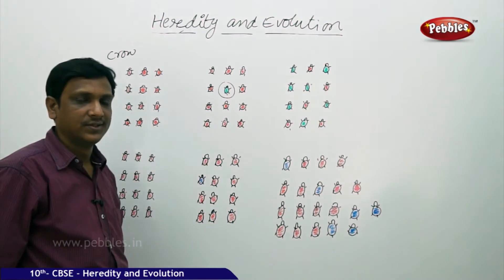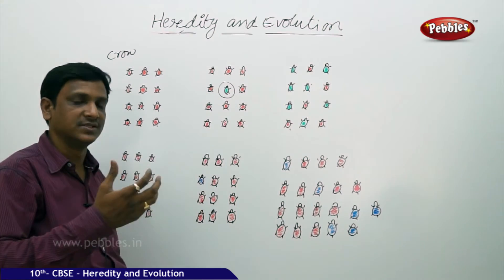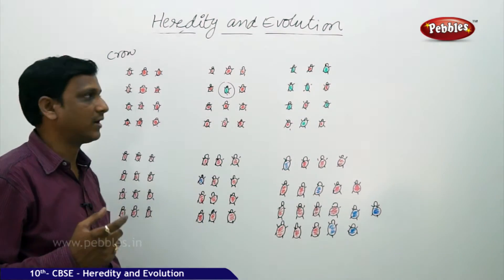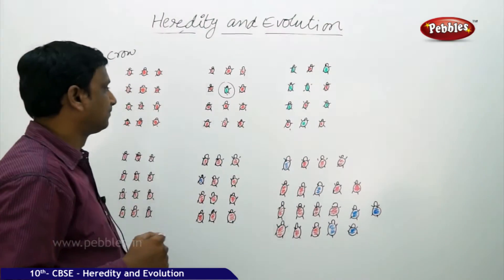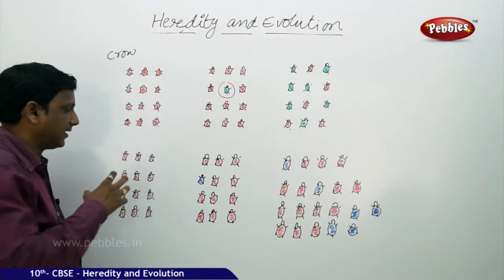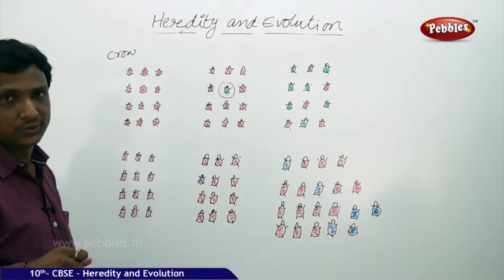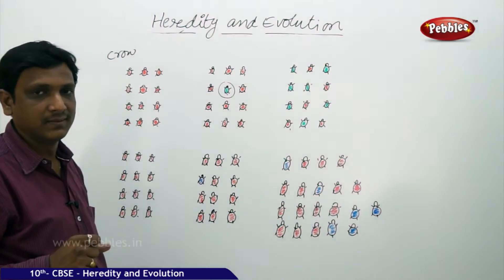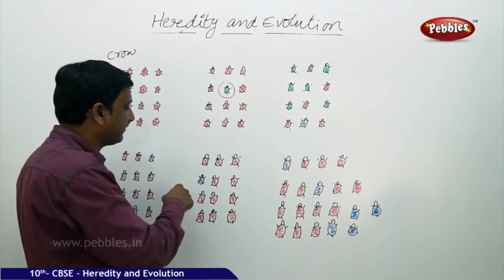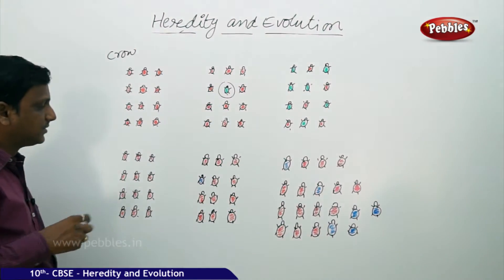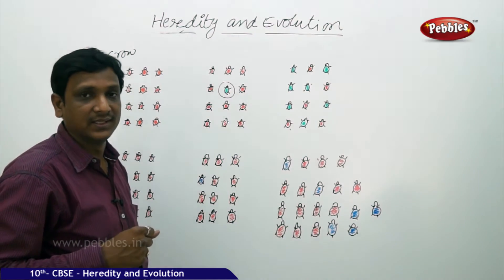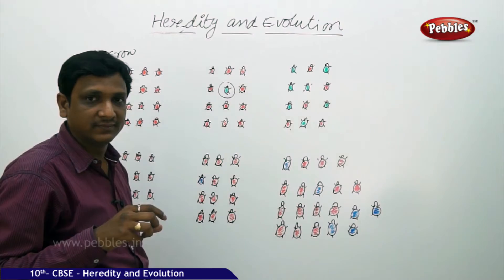The green color is an advantageous variation for the beetle population. Over generations, the green beetle population becomes more and the red beetles become less. Now let us see the second situation. Again in the forest, red beetles are being eaten by crows. A new variation appears — a beetle develops a blue color. The blue color beetles can pass this variation to their progeny, but the crows can identify the blue color even better than the red color.